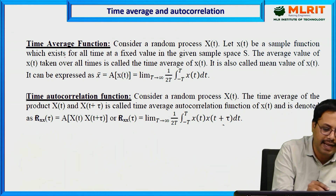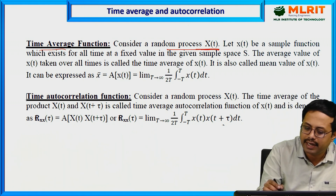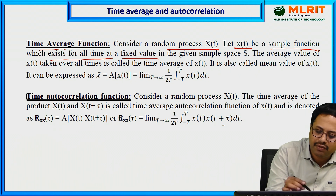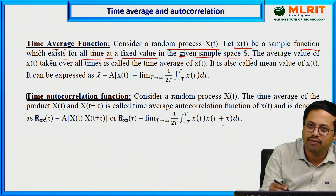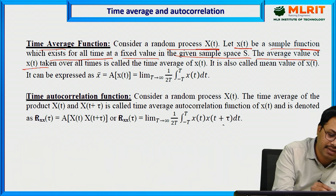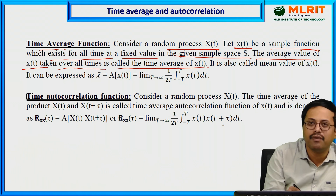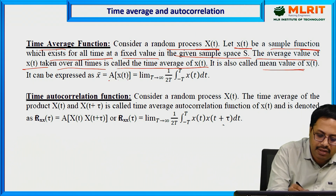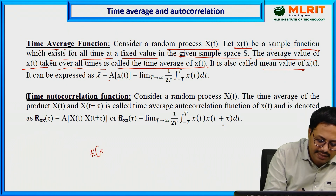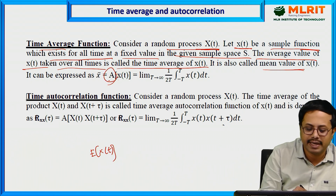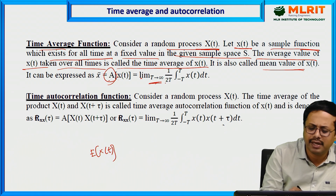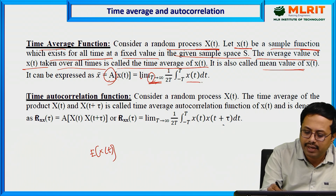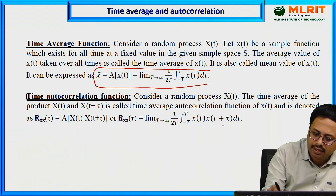Now discussing time average formally: let x(t) be the random process or sample function which exists for all time at a fixed value in a given sample space, that is x(t1), x(t2), and so on up to x(tn). The average value of x(t) taken for all times is called the time average of x(t), also known as the mean value, denoted as A[x(t)]. The formula is: A[x(t)] = limit as T tends to infinity of (1/2T) integral from −T to T of x(t) dt.